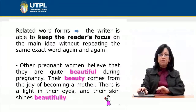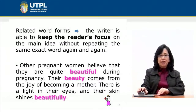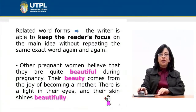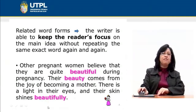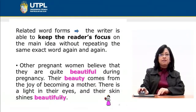For example: 'Pregnant women believe that they are quite beautiful during pregnancy. Their beauty comes from the joy of becoming a mother. There is a light in their eyes and their skin shines beautifully.' In this example we have three related words: 'beautiful' the adjective, 'beauty' the noun, and 'beautifully' the adverb — all three related words used within the same paragraph.